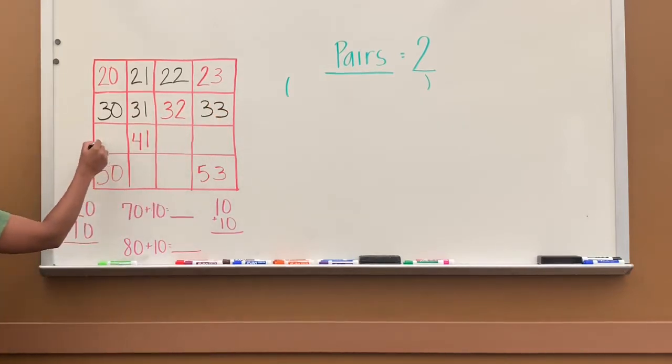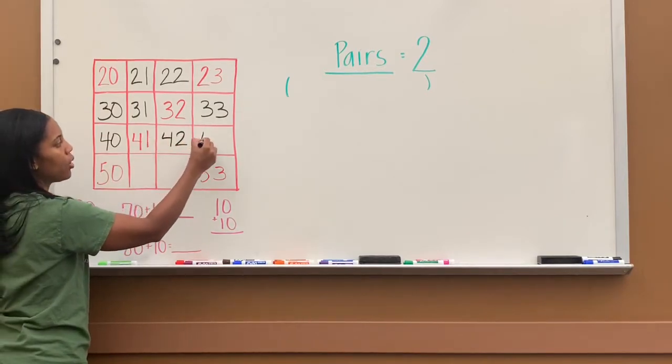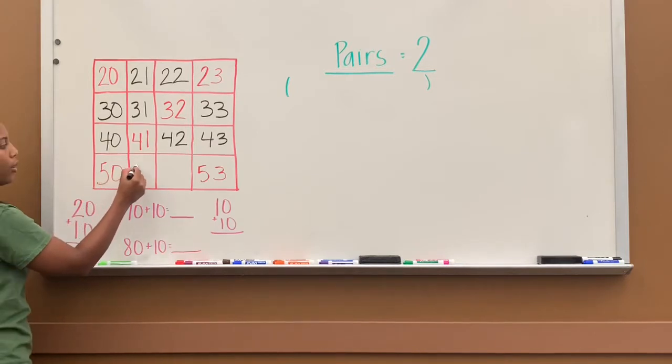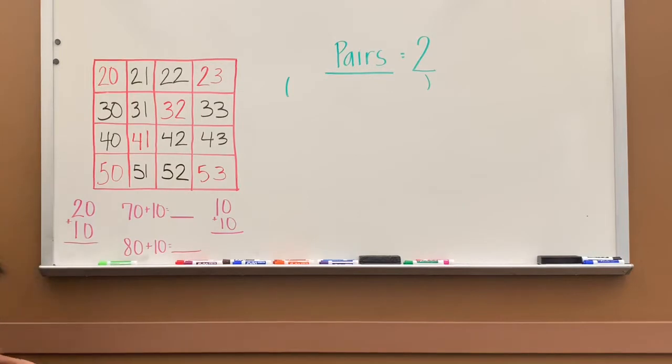Alright, next here. So again by the tens: 20, 30, 40. 41 is done, 42, 43, 50 is done. So 51, 52, 53. And always check to make sure it's correct. Check it both ways. And so it all looks good.